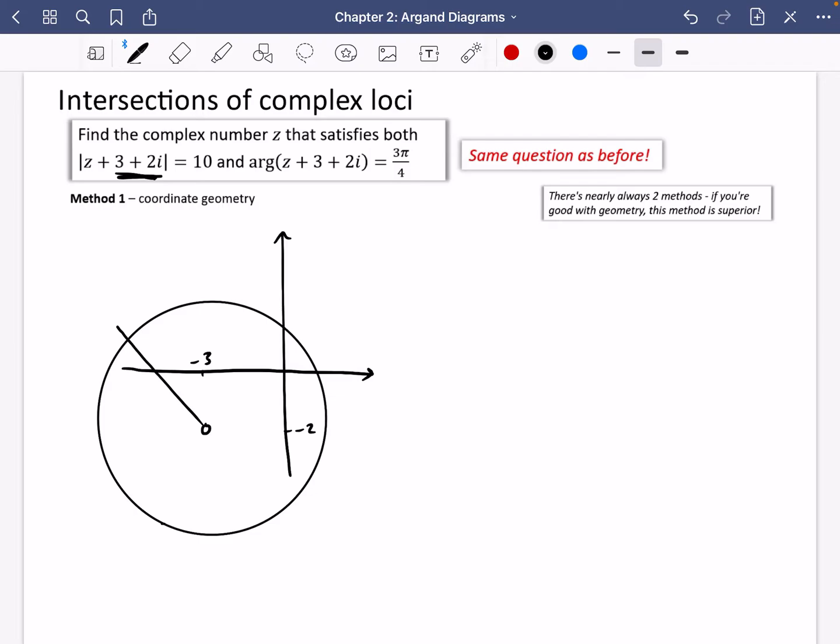Now, if you think about what's actually happening, this one, which is the circle, is any of these points around here. That could be any of those points. But what we're actually trying to say is we want it to be any of those points on the circle, plus we want it to be any of those points along there.